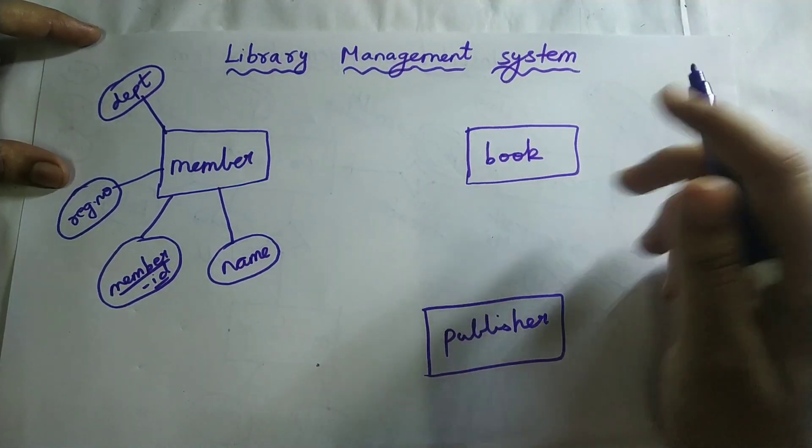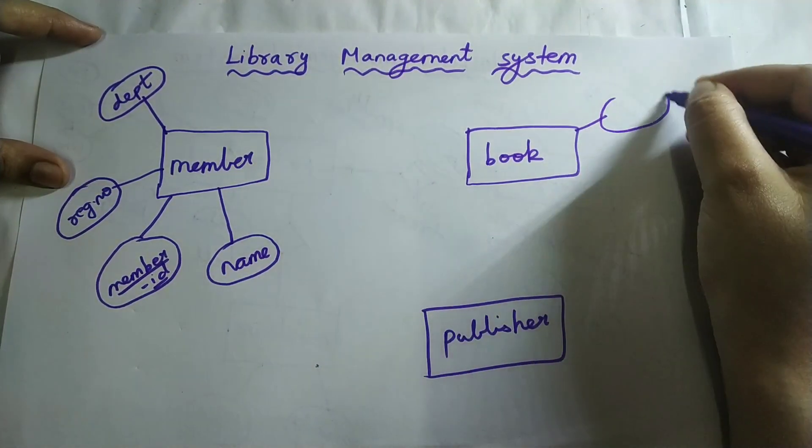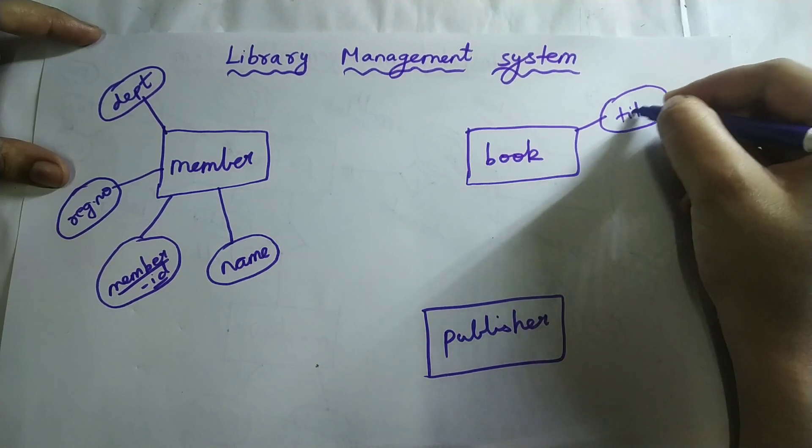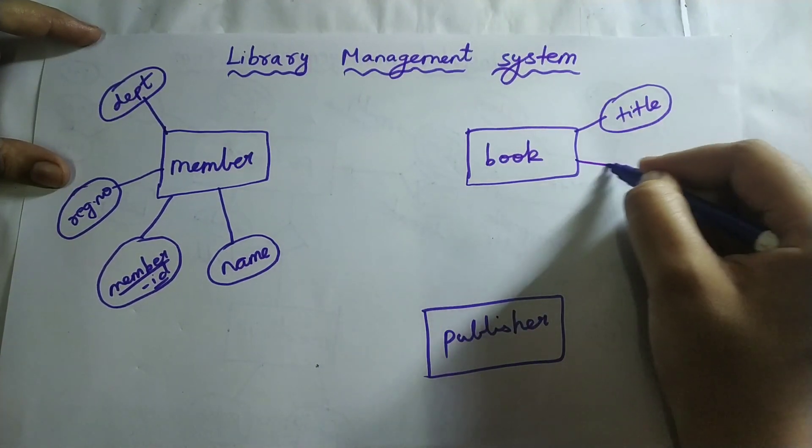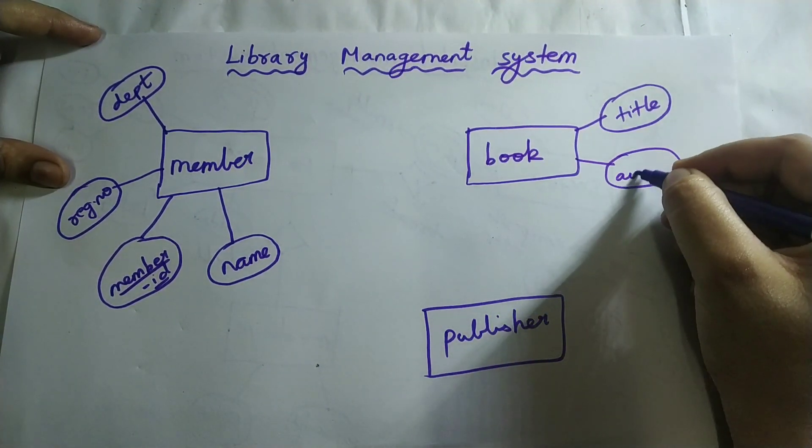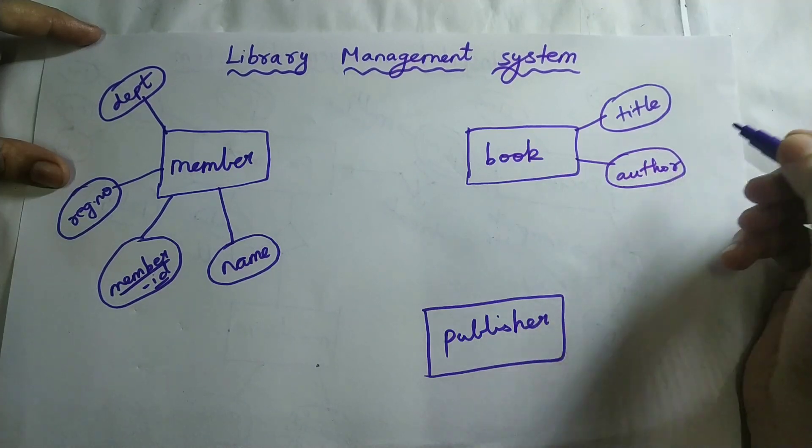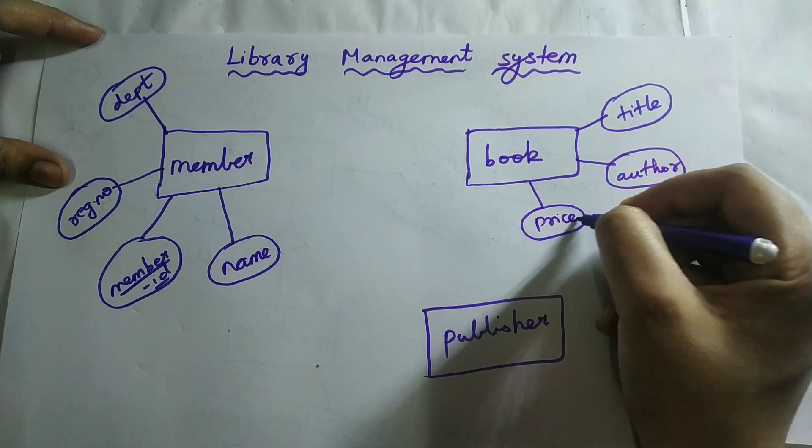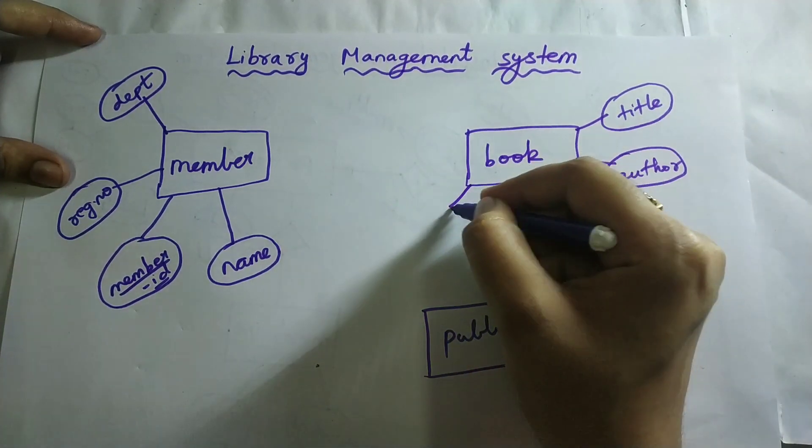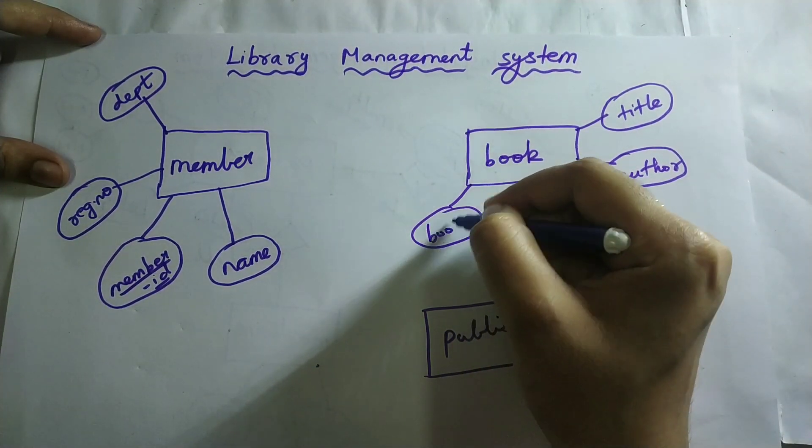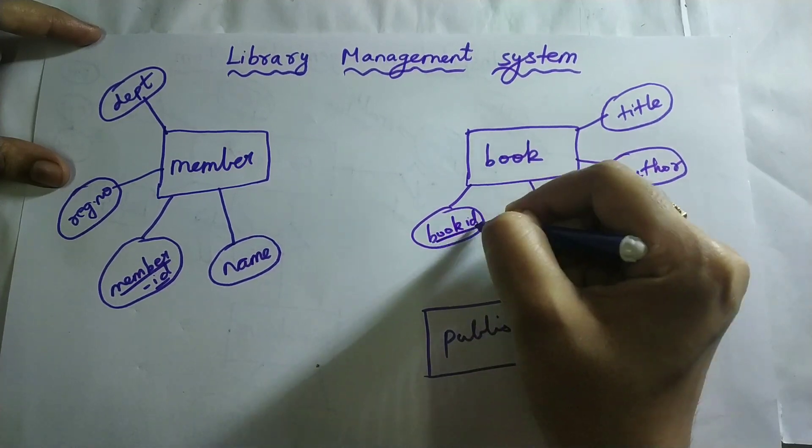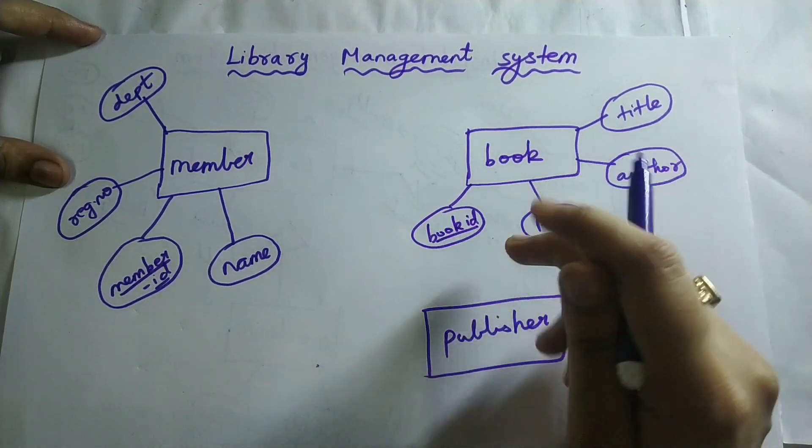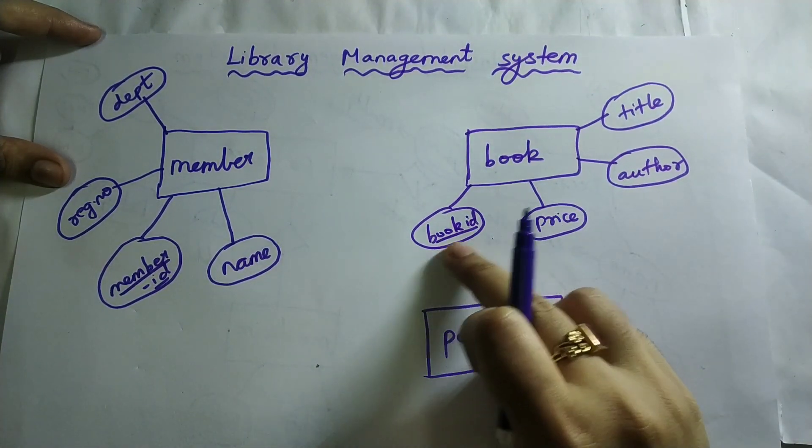Next, attributes of book. Book will have a title, so name of the book. Next, author of the book. Next, the price of that book. Next, book will also have an ID which is unique for every book. Therefore, it is a primary key, so I should underline.